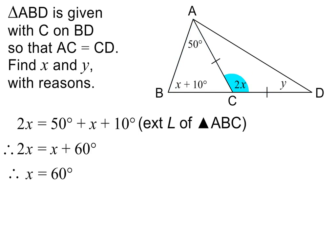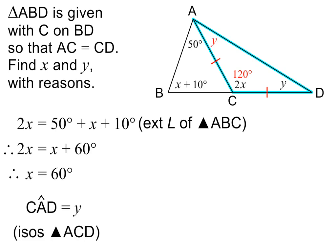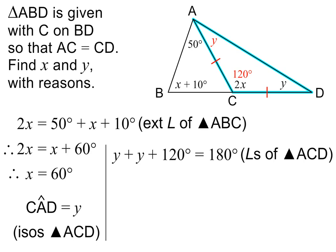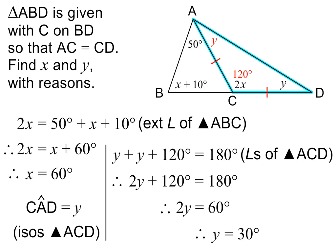The exterior angle is therefore 2 times 60 degrees, or 120 degrees. To find y, we need to use this triangle. And because it is an isosceles triangle, angle CAD is also equal to y. Don't forget to write the reason in this step. We can therefore write that y plus y plus 120 degrees equals 180 degrees, because the sum of the interior angles of a triangle is always 180 degrees. To solve the equation, we begin by adding like terms on the left. We then subtract 120 degrees from both sides, and then divide both sides by 2. y is therefore equal to 30 degrees.